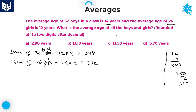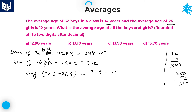Now the question is: what is the average age of all boys and girls? Average of all boys and girls — that is 32 boys plus 26 girls — equals the sum of all those members, that is 448 + 312, divided by the number of persons, 32 + 26 = 58. So we get 760 divided by 58.